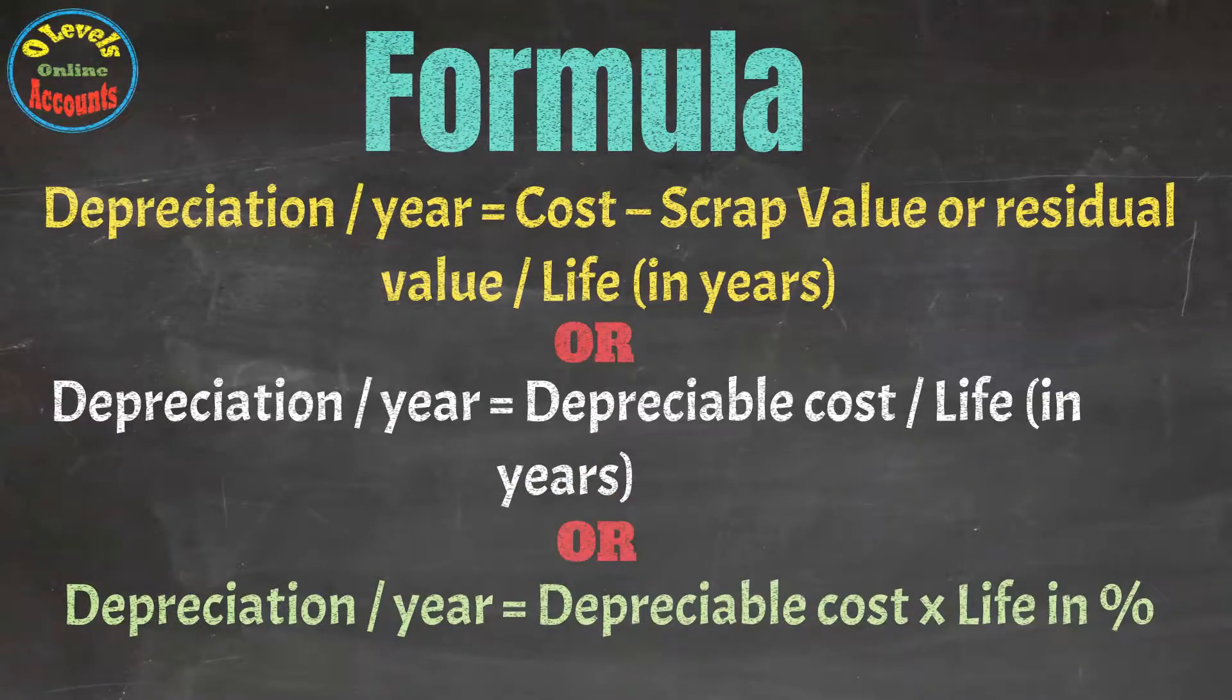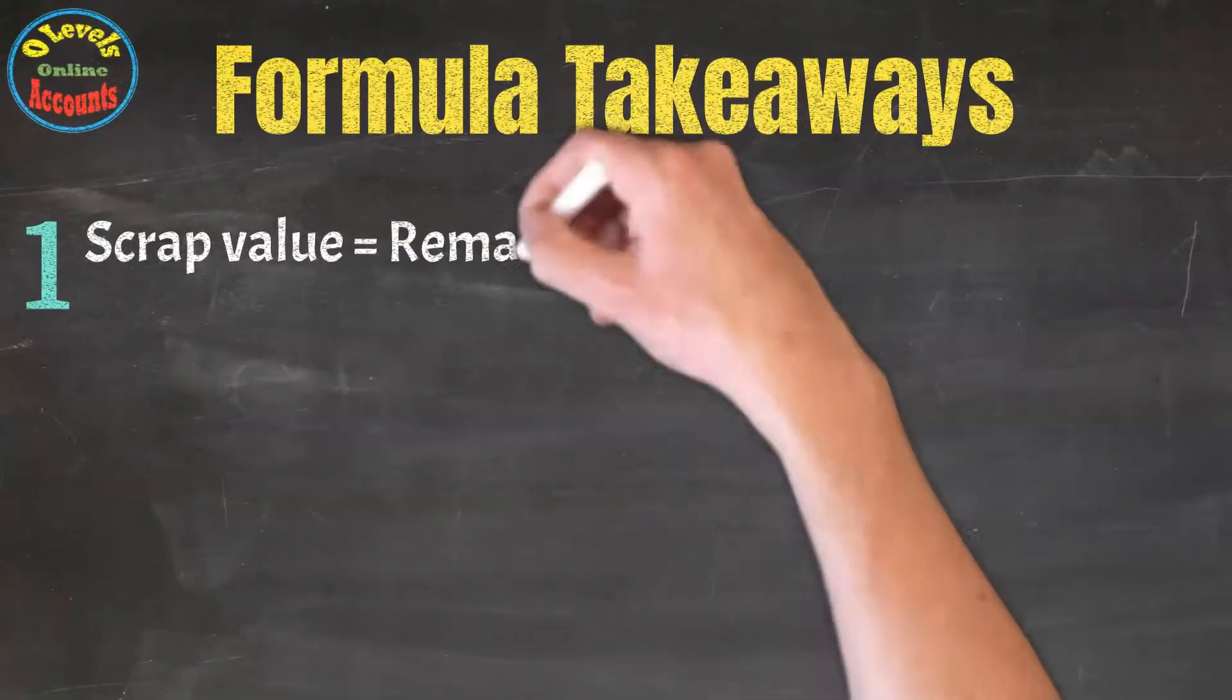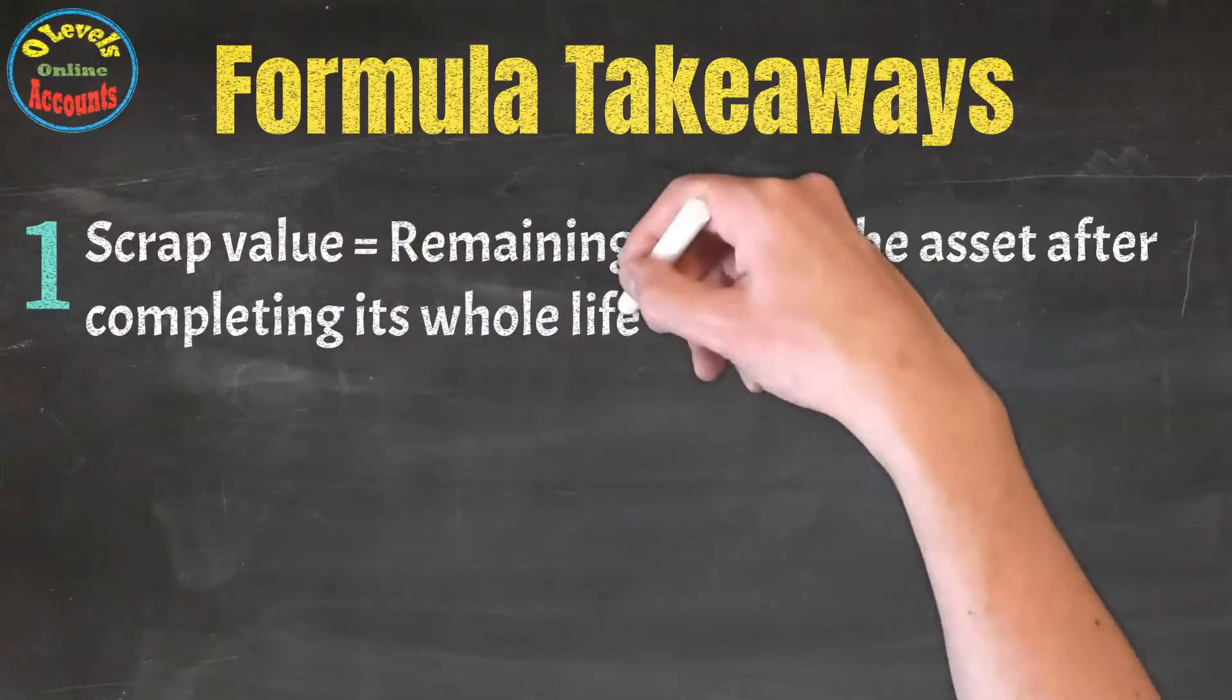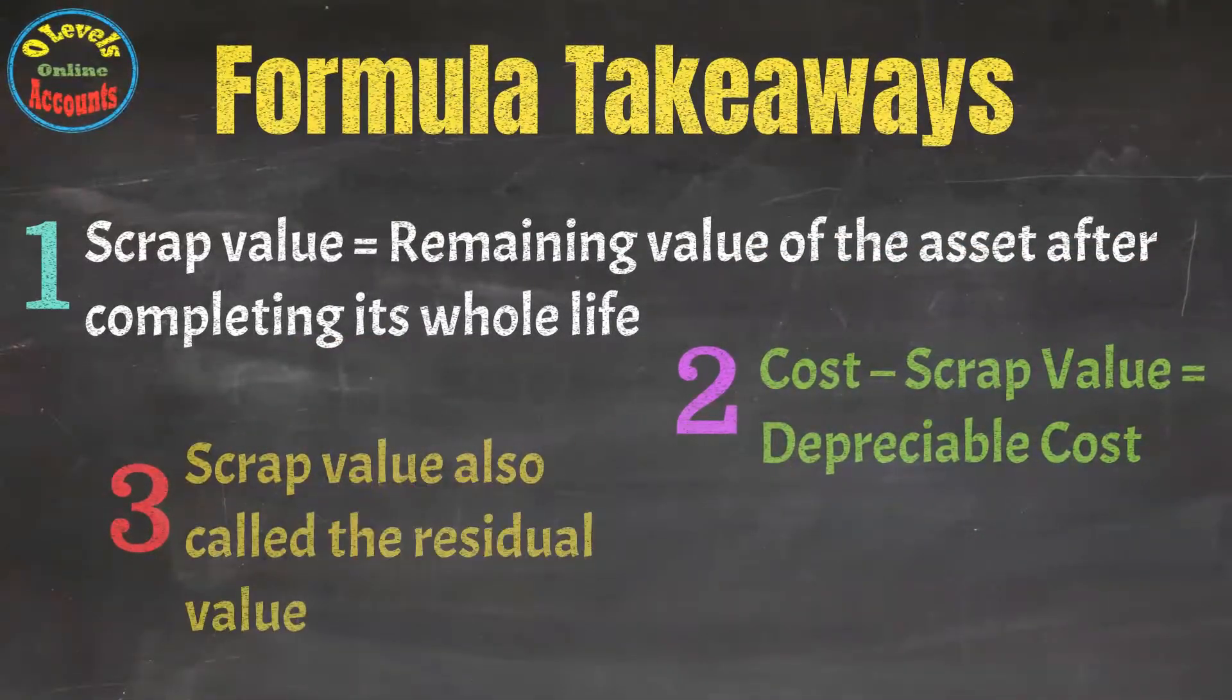Let's look at some important points. First one is scrap value. It is the remaining value of the asset after completing its whole life. Secondly, cost minus depreciation is called depreciable cost. And finally, scrap value is also called residual value.